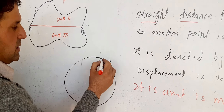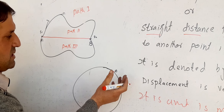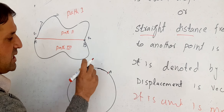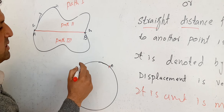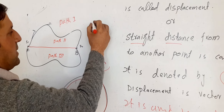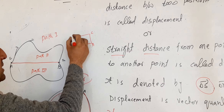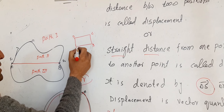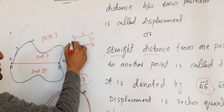When a body returns to the same starting point, the displacement is zero because the two positions are the same — start and end are equal. The distance, however, equals the full path traveled. For circular motion, distance equals 2 pi r (the circumference). For a rectangular path with sides 5m and 3m: distance equals 5 plus 3 plus 5 plus 3 equals 16 meters, but displacement equals zero.